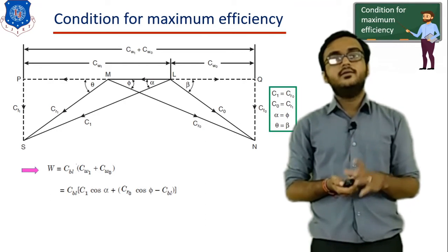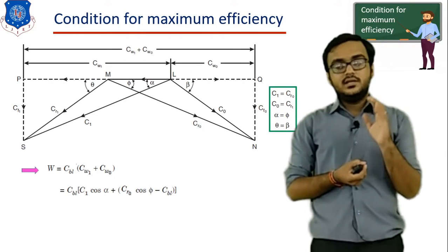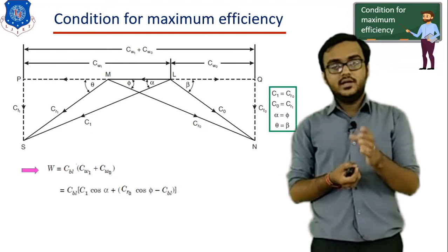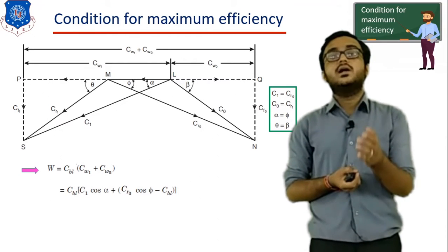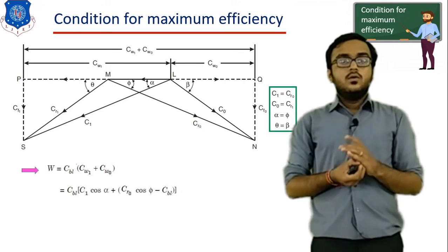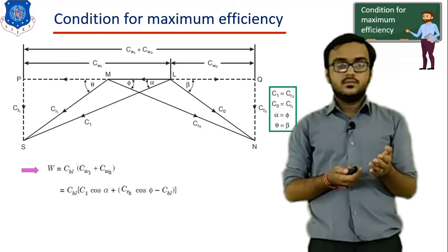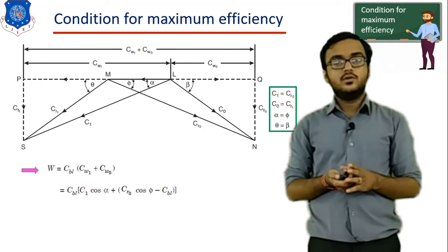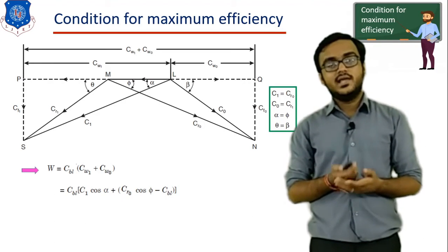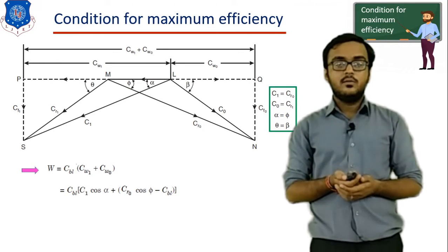For the Parsons turbine, the inlet velocity of steam is equivalent to the relative velocity at outlet — that is, CRO = C1 — and φ = α, θ = β. Replacing φ with α, we get the expression: W = CBL × (2·C1·cos(α) − CBL).